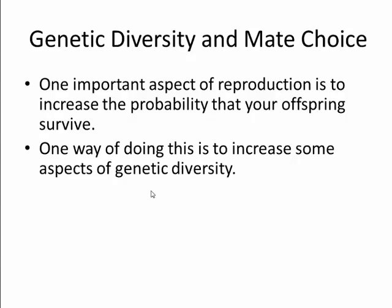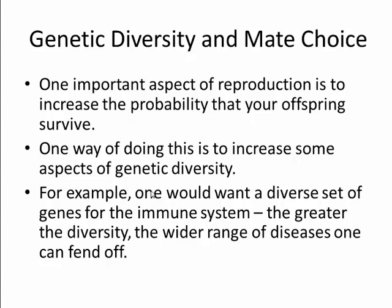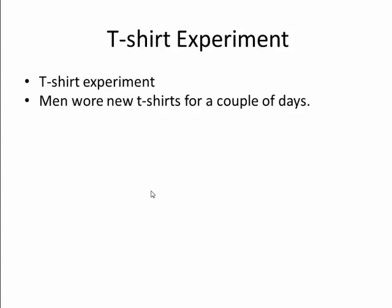One important aspect of reproduction is increasing the probability that your offspring will survive, and one way to do this is to increase genetic diversity. Misguided people talk about the purity of race — that's not a good survival strategy, and they're also idiots. Increasing genetic diversity, especially when it comes to the immune system, is beneficial. If I have a certain immune system and my wife has a different one, we bring our genes together and our children become resistant to a greater number of diseases — that's the value of genetic variation. But how do you know the genetic diversity of the people you're dating? One way is smell.